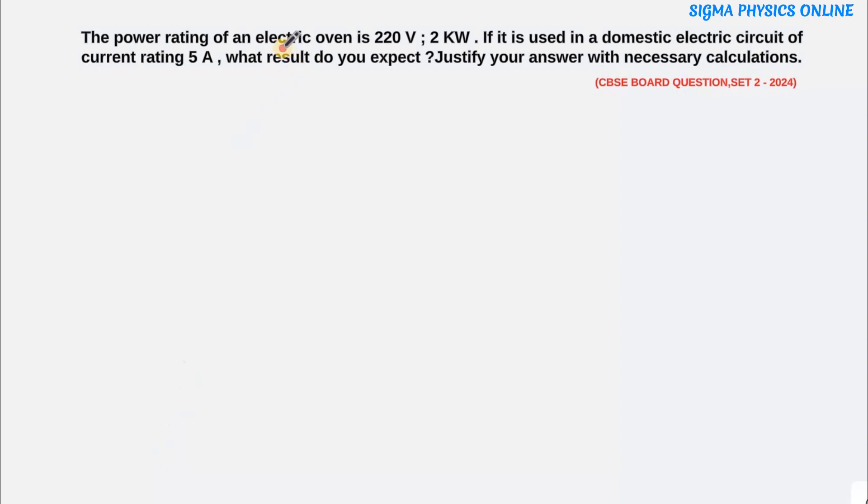Alright, so here we have an electric oven whose power rating is given and it's said that it's operating at a voltage of 220 volt. Now, we will use it in a circuit whose current rating is 5 ampere. That means the current of 5 ampere is allowed through the circuit within the safe limit. So if we connect this oven with the current rating of 5 ampere in the circuit, what can we expect from it? We will have to justify the answer with necessary calculations.